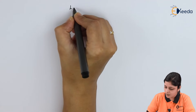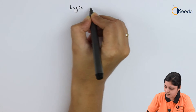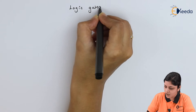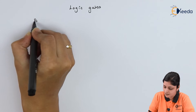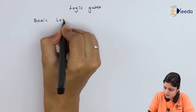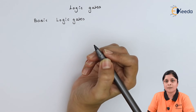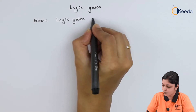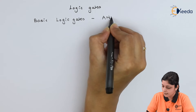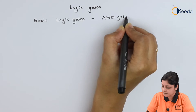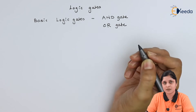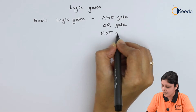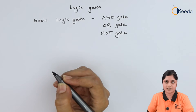Our heading is logic gates. In the types, we have basic logic gates. Basic logic gates consist of the AND gate, the OR gate, and the NOT gate.